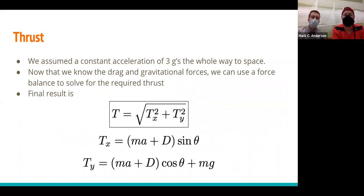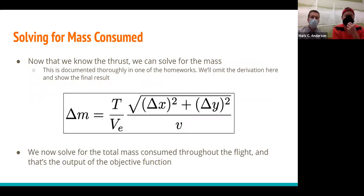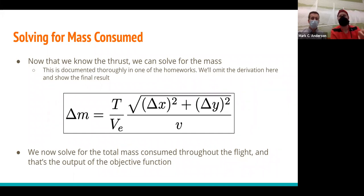To simplify the problem, we assumed a constant acceleration of 3G throughout the entire launch. With our drag and gravitational forces known, we calculated the required thrust. Using the thrust and our delta X and delta Y, we calculated the work done over each increment, then used conservation of momentum — with the fuel exhaust velocity and mass — to estimate mass consumed per increment. We summed those values to get the total fuel consumed over the entire launch.